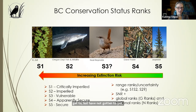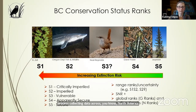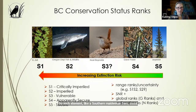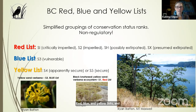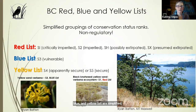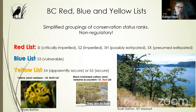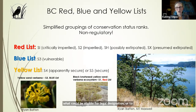In addition, NatureServe will use the same process, collecting data across North America, to assign a G rank or global rank. NatureServe Canada will do the same and produce a national or N rank. So each element — like a southern maidenhair fern — would have an S rank, an N rank, and a G rank. A lot of our users are more familiar with the BC red, blue, and yellow list. The red, blue, and yellow lists are a simplified grouping of the conservation status ranks. They are not a regulatory list — they are to help prioritize what could be eligible for legal designation or to help prioritize conservation action, but on their own they are not actually legal lists.